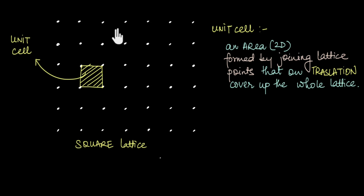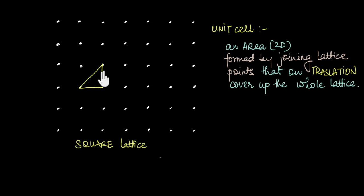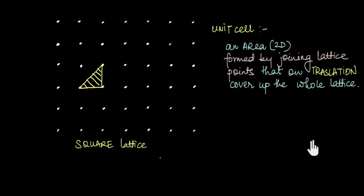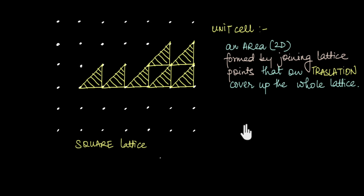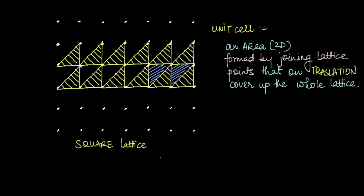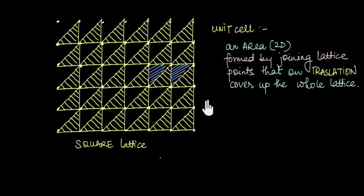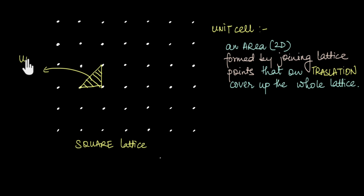Now, are there other ways of describing this lattice using a different unit cell? Can we describe this lattice using a triangle as the unit cell? Can a triangle on translation cover up this whole lattice? You can pause the video and think about this for a moment. Well, if we took this triangle and translated it, we will realize that there will always be gaps left behind. So a triangle on translation does not cover up a whole two-dimensional space — there will always be gaps left behind. So a triangle cannot be considered a unit cell.